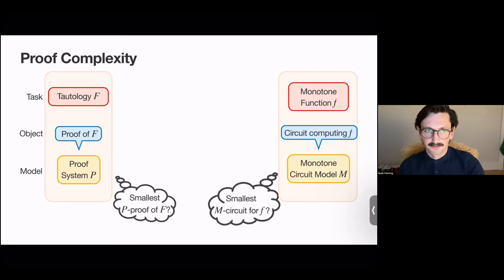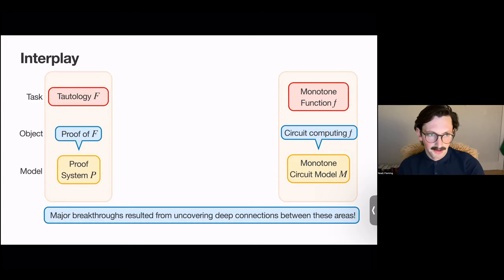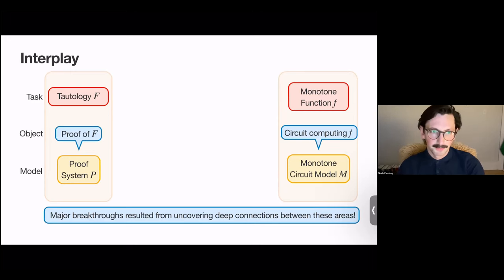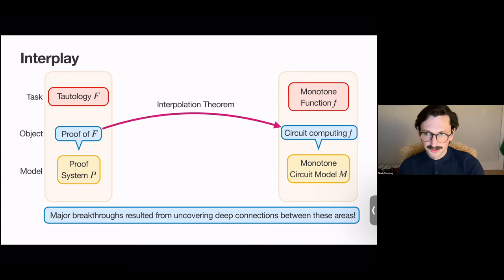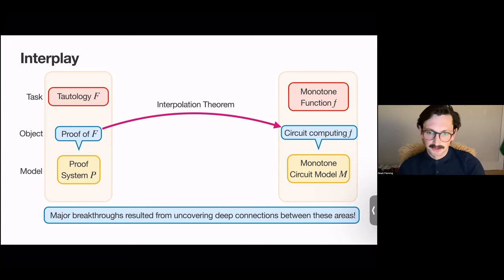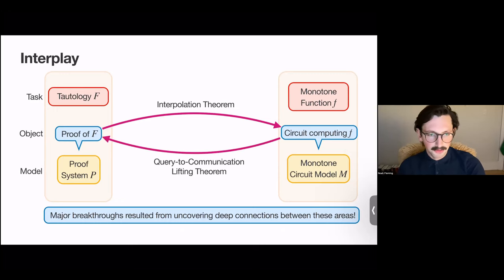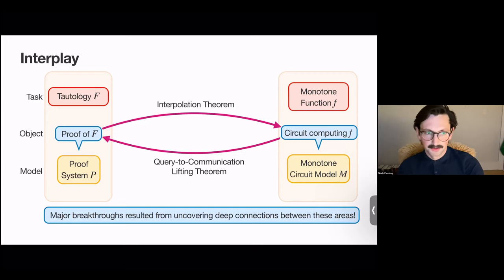These are both very vibrant areas of research, and recently there's been a ton of breakthroughs in both areas that have resulted from uncovering these surprising and very deep connections between them. On one hand, we have interpolation theorems, which for certain proof systems turn proofs in those proof systems into circuits in an associated model of monotone computation for computing some associated function. In the other direction, we have these query-to-communication lifting theorems that turn computations in some circuit model into proofs in an associated proof system.